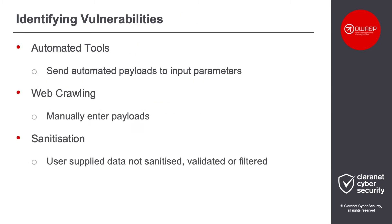So how do we identify cross-site scripting vulnerabilities? We can make use of automated tools. These tools send automatic payloads to input parameters — one example of such a tool is XSSO, which comes bundled with the Kali Linux penetration testing distro. We can also manually call the web application and enter payloads ourselves, which allows for more granularity than automated tools. Lastly, looking into the source code is a great option if available or open source — we can look for any user-supplied data that does not appear to be sanitized or filtered.